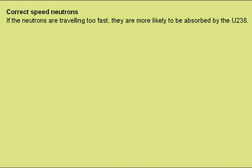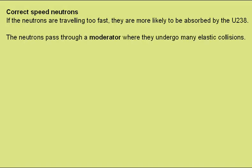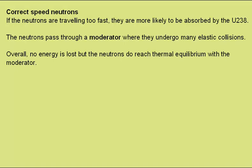We need the correct speed of neutrons. If the neutrons are traveling too fast, they are more likely to be absorbed by the uranium-238 nuclei, which will not then fission. The neutrons pass through a substance called a moderator where they undergo many elastic collisions. Overall, no energy is lost, but the neutrons do reach thermal equilibrium with the moderator, meaning they have the same kinetic energy as the particles in the moderator.